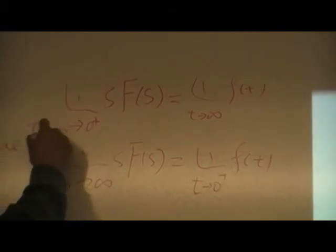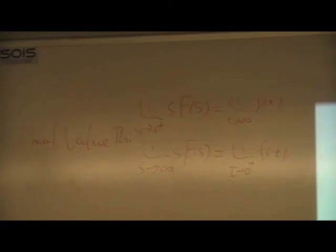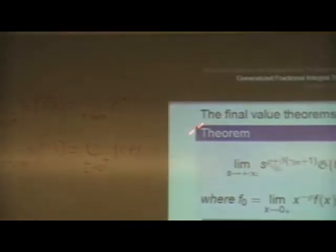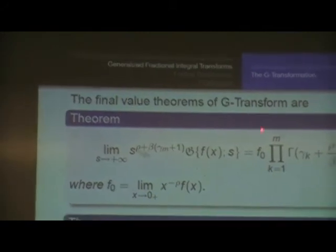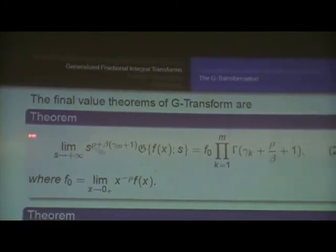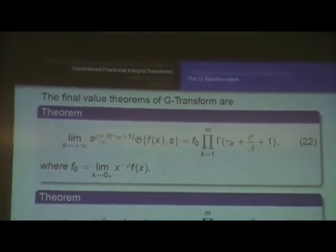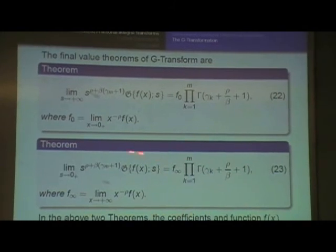The most amazing thing here is in generalized fractional order calculus, we still have these kind of final value theorems like this. The first one is the initial value, and then the last 23 is the final value theorems.